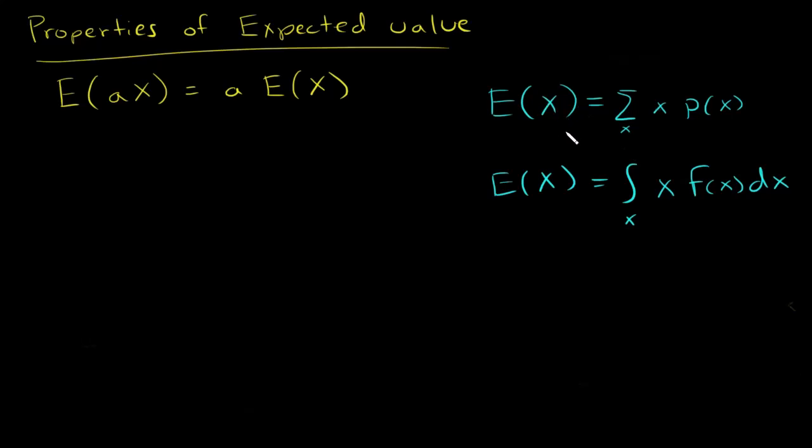So this is by definition what expected value of X is. Now if I want to find the expected value of a times X, this would be in the discrete world. If X is discrete, I would basically instead of having an X there, plug in aX, so I'd have aX times the probability mass function of X. Since a does not involve X, it's just a constant like the number three for example.